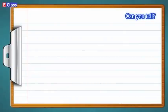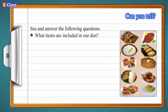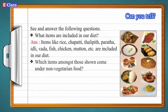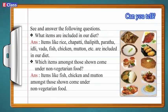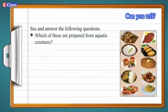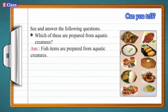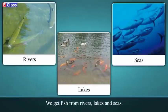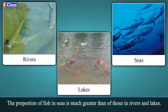Can you tell? What items are included in our diet? Items like rice, chapati, paratha, idli, fish, chicken, mutton etc. are included in our diet. Items like fish, chicken and mutton come under non-vegetarian food. Fish items are prepared from aquatic creatures. Many of us include fish in our diet. We get fish from rivers, lakes and seas. The proportion of fish from seas is much greater than those from rivers and lakes.